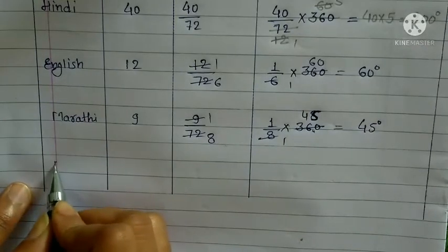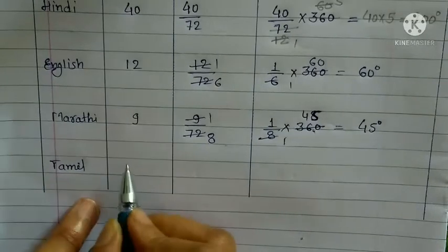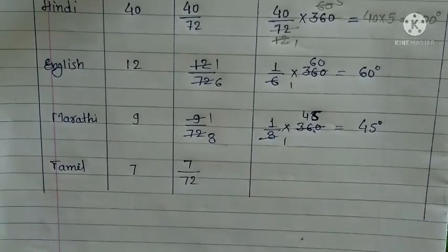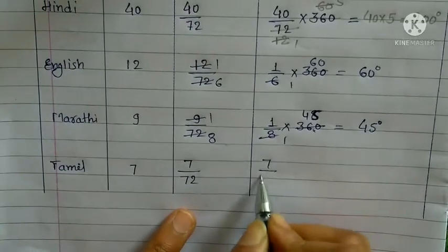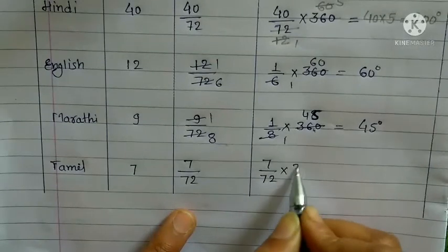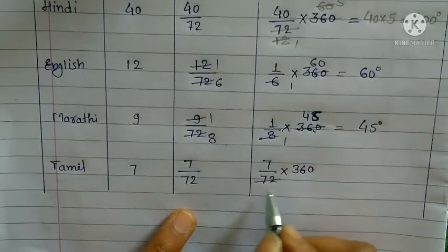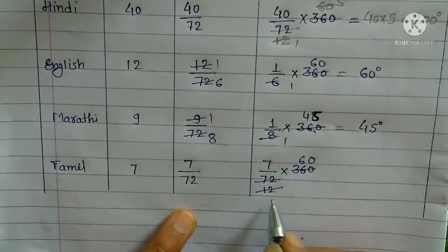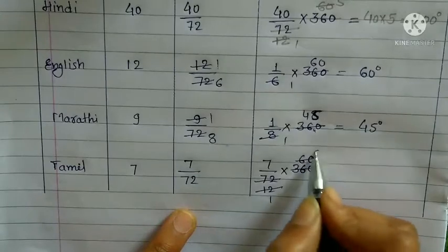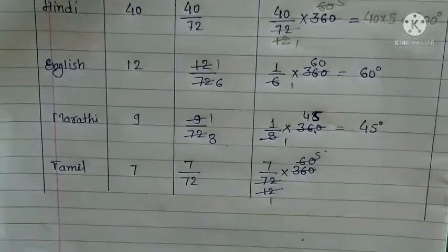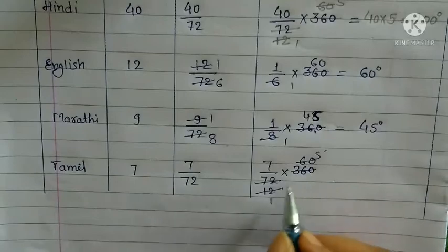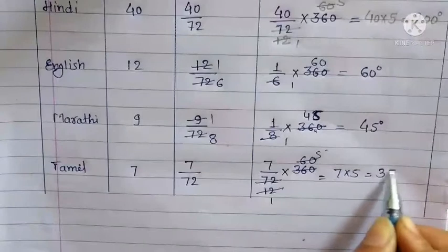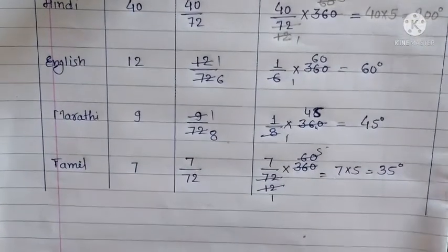The next language is Tamil. How many people speak Tamil? 7 persons. So 7 upon 72 — this cannot be simplified easily, so we directly calculate: 7 upon 72 into 360. The multiplication gives: 6×1=6, 6×2=12, 6×6=36, 12×1=12, 12×5=60. So the angle for Tamil is 7 into 5 = 35 degrees.